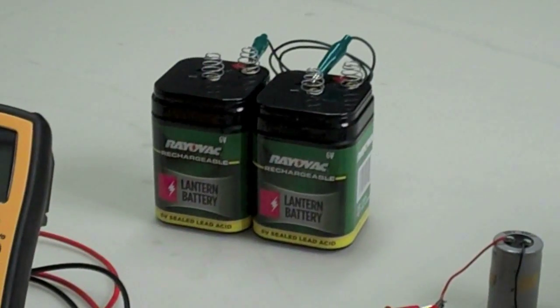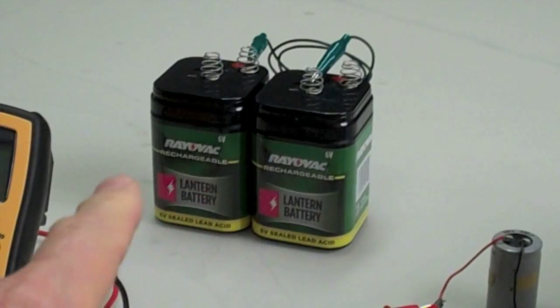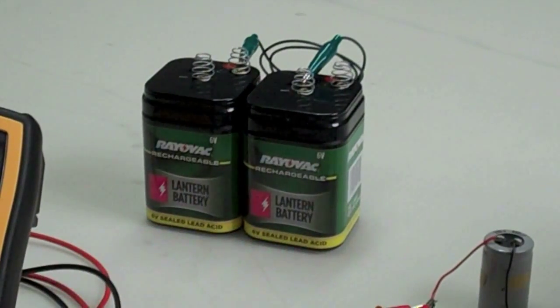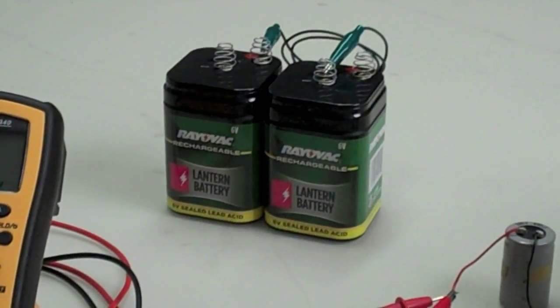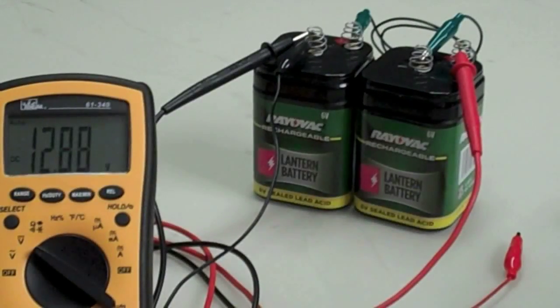Yesterday I used another one of these Duracell 9 volts and I ran it for about an hour and fully charged these two 6-volt lead-acid lantern batteries. Brought them up to full charge, which was about 6.5, 6.6 volts each. They're connected in series now because I'm going to show you how this little battery will charge those big batteries.